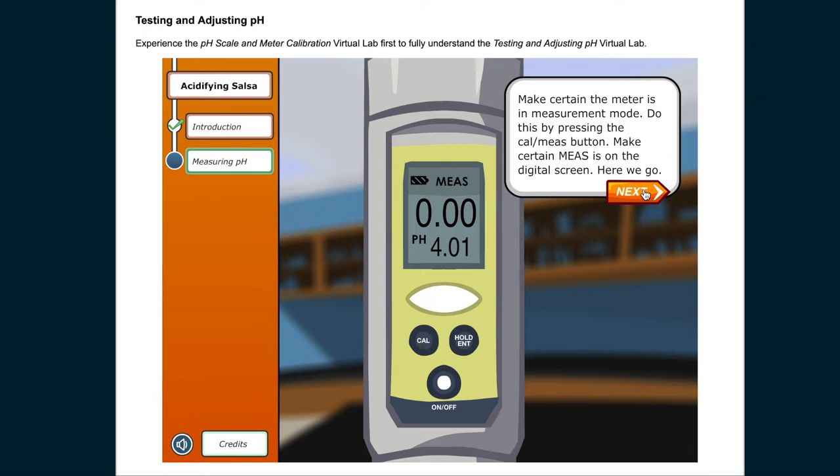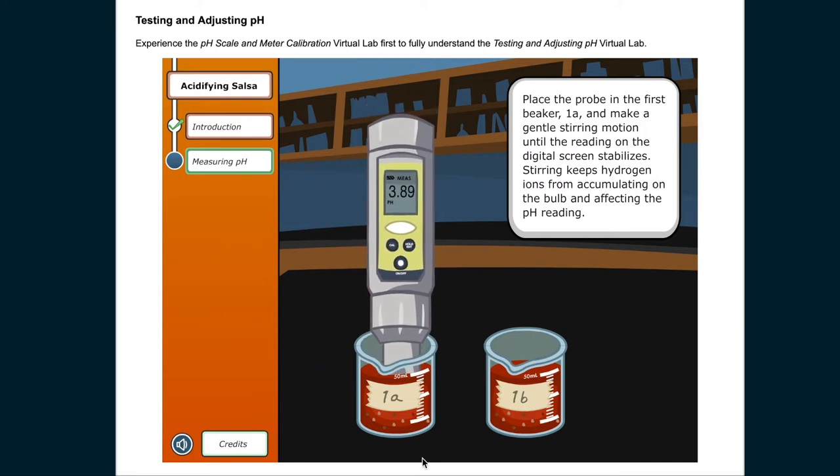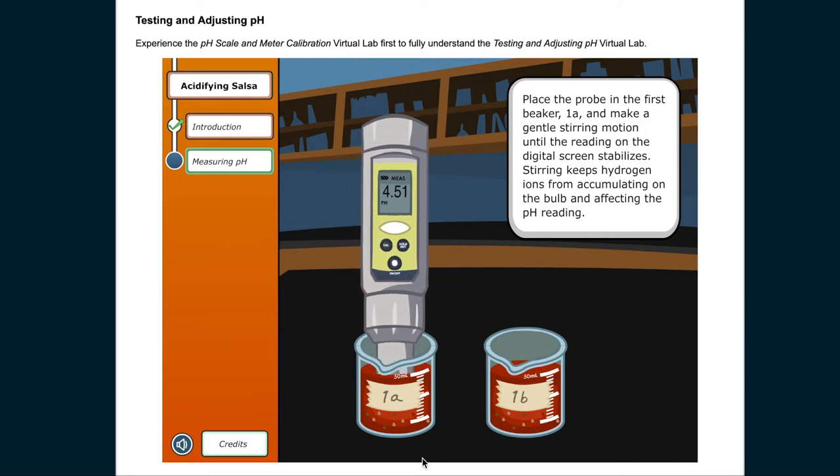Here we go. Place the probe in the first beaker, 1A, and make a gentle stirring motion until the reading on the digital screen stabilizes. Stirring keeps hydrogen ions from accumulating on the bulb and affecting the pH reading.